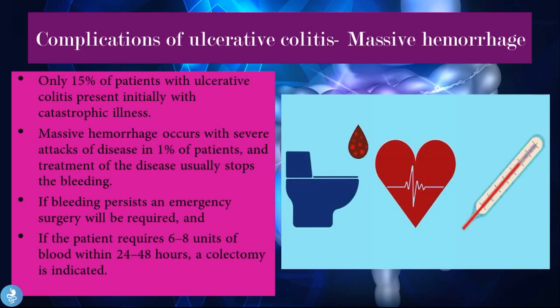Complications of ulcerative colitis: first, massive hemorrhage. Only 15% of patients present initially with catastrophic illness. Massive hemorrhage occurs with severe attacks in 1% of patients, and treatment of the disease usually stops the bleeding. If bleeding persists, emergency surgery is required, and if the patient requires 6 to 8 units of blood within 24 to 48 hours, a colectomy is indicated.